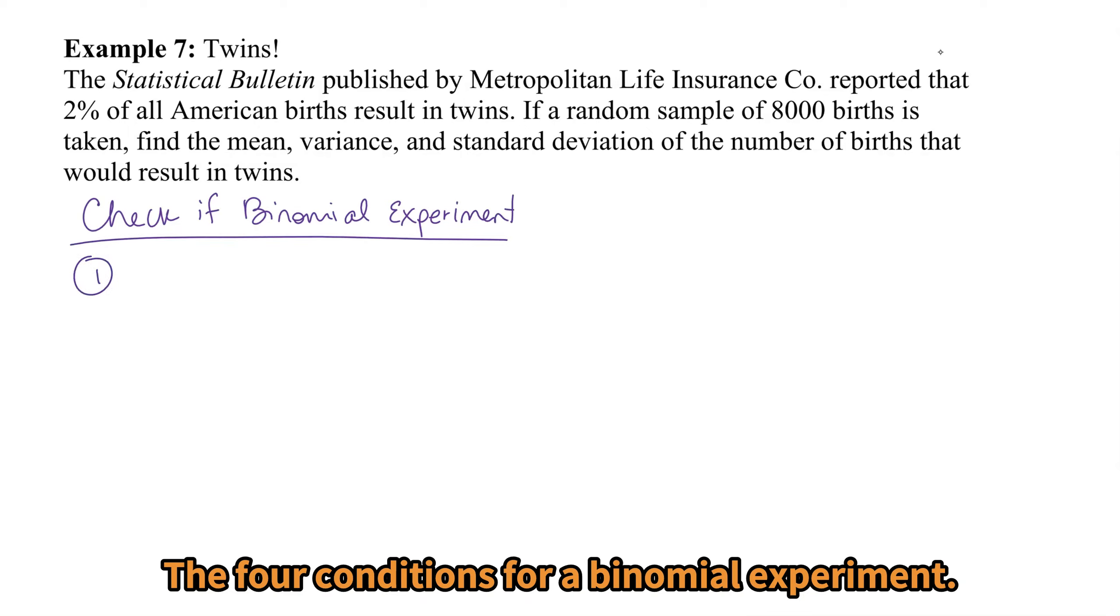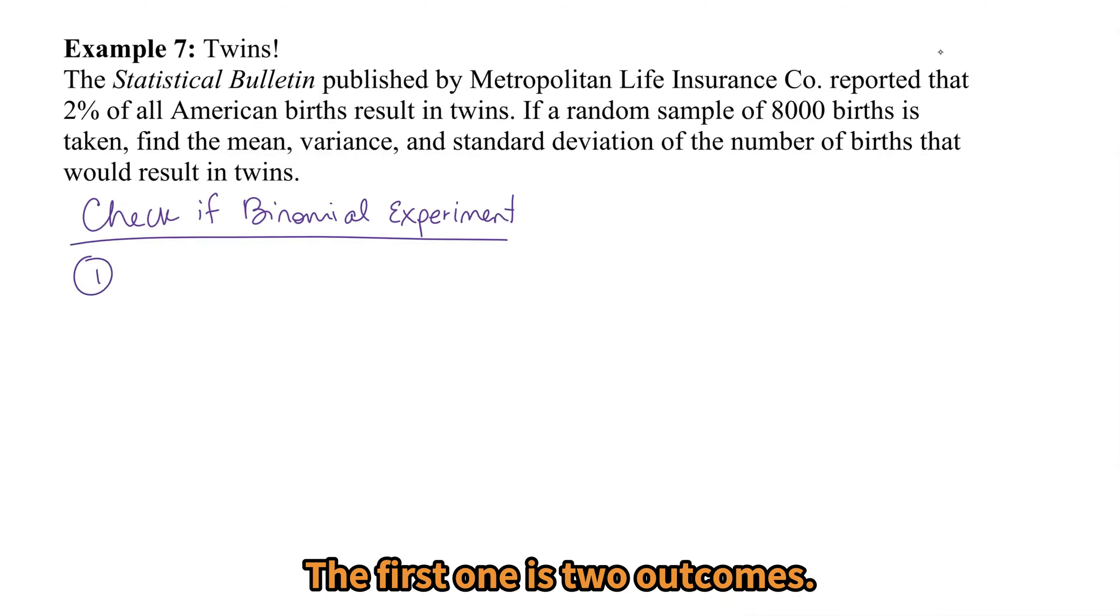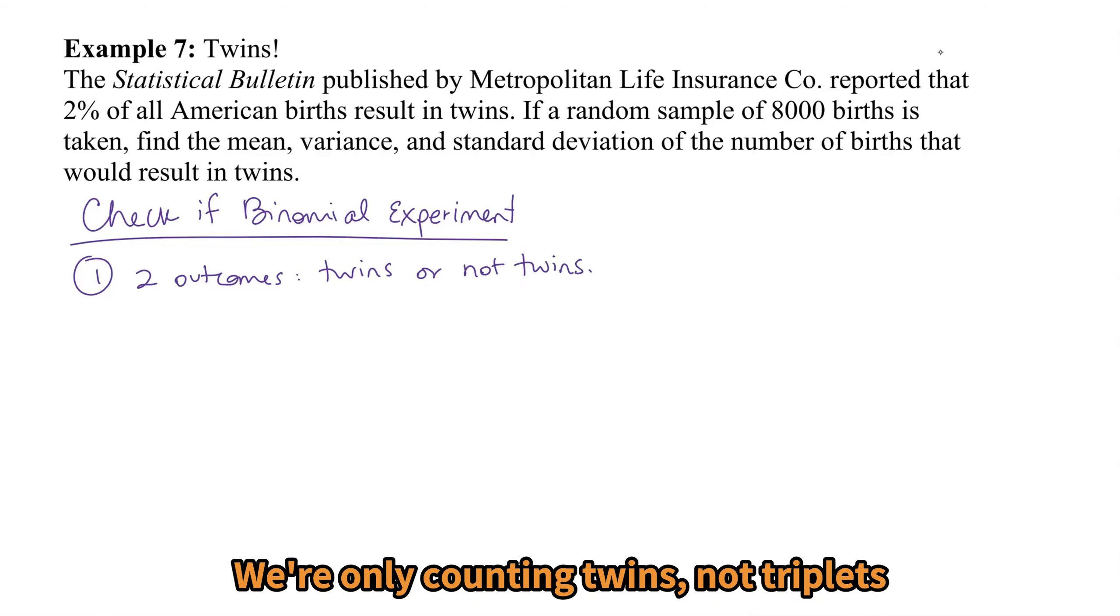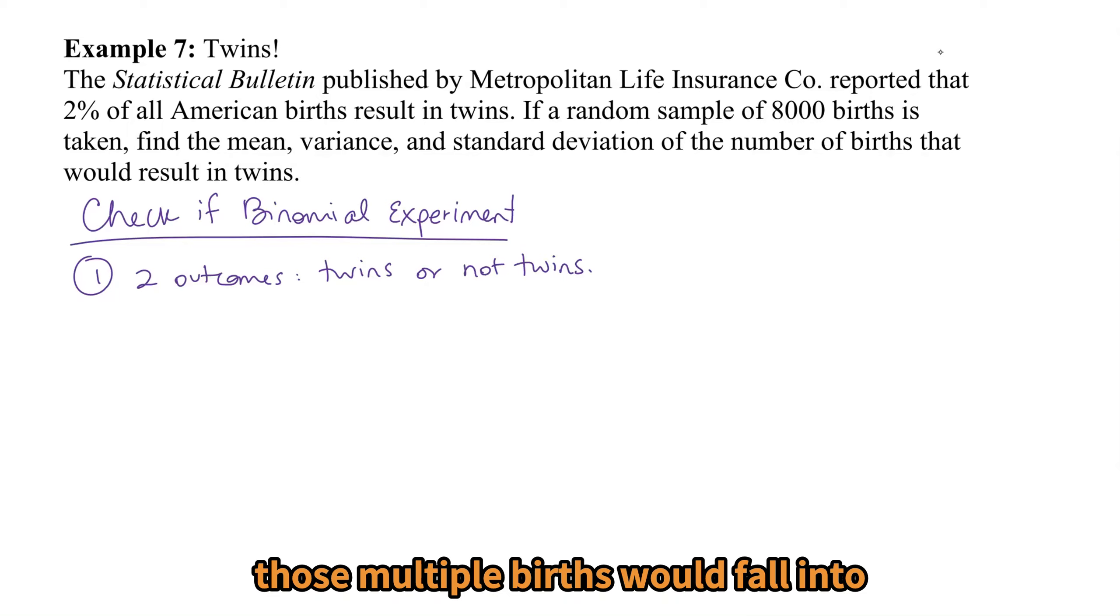So four conditions for a binomial experiment. The first one is two outcomes, and we have that: twins or not twins. We're only counting twins, not triplets, quadruplets, or more multiples—only twins. So twins or not twins. Those multiple births would fall into the not twins group with the singles.